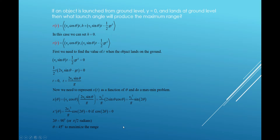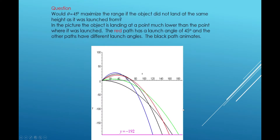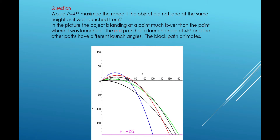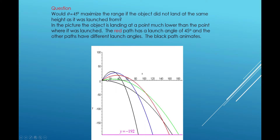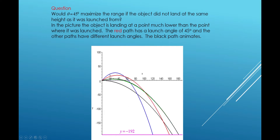What your intuition might have told you is true. But the question is, would 45 degrees maximize the range if the object did not land at the same height as it was launched from? My opening picture clearly demonstrated that it doesn't. Here we've got a little animation showing a variety of launch angles — an animated black path, the zero-degree case, the one that actually maximizes the range shown in green, 45 degrees in red, and 60 degrees in blue.